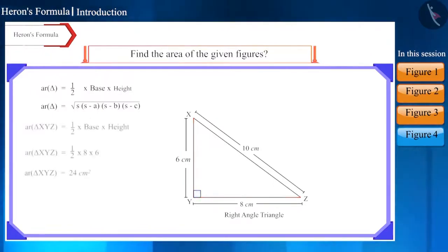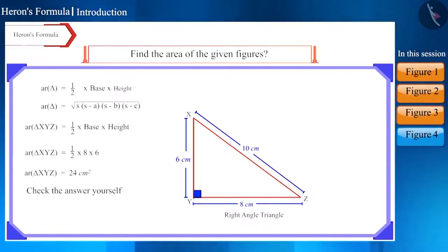We will get the area as 24 square centimeters. If you solve it using Heron's formula, then also you will get the same answer. We can see that if we know the length of all three sides as well as the height, as in the case of a right-angled triangle, then using the first formula, we get the area quickly.